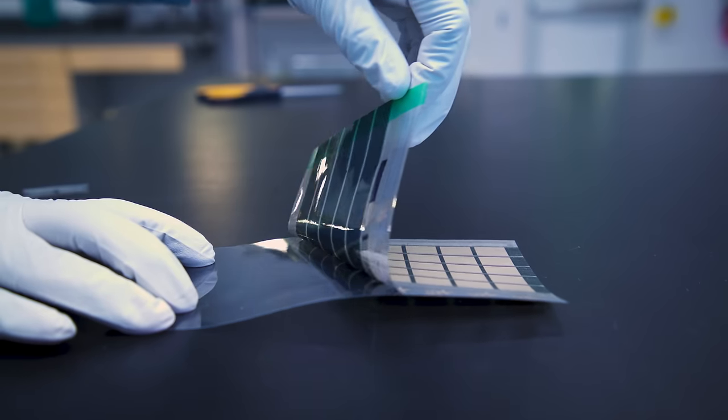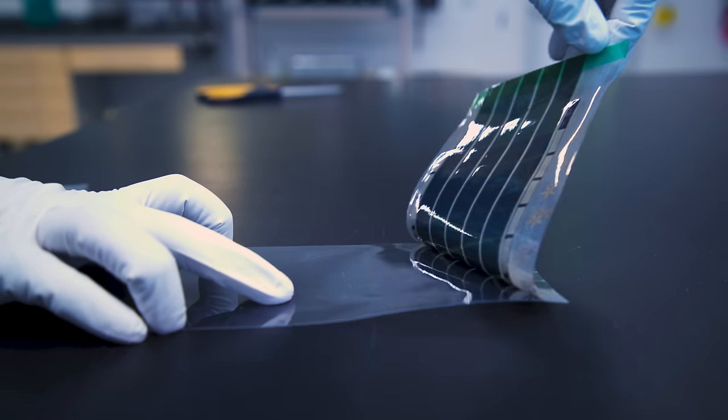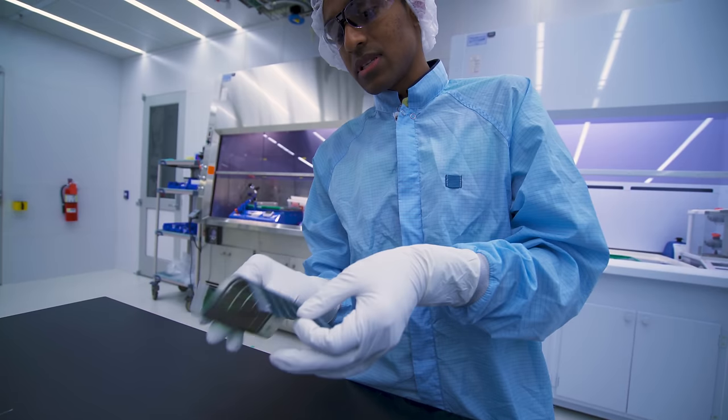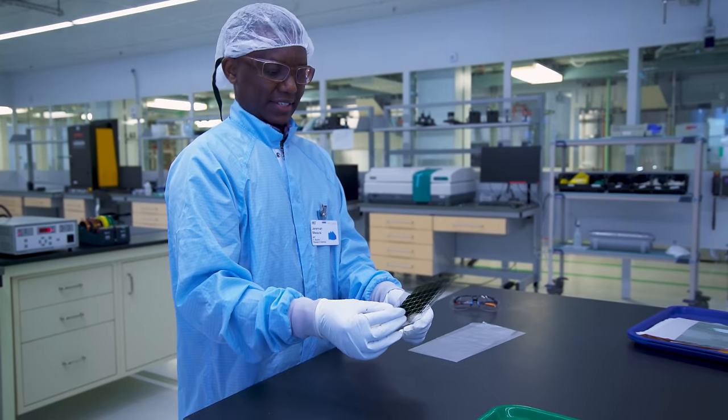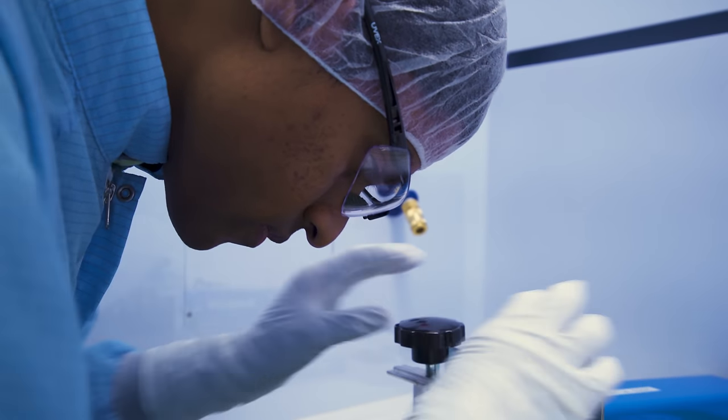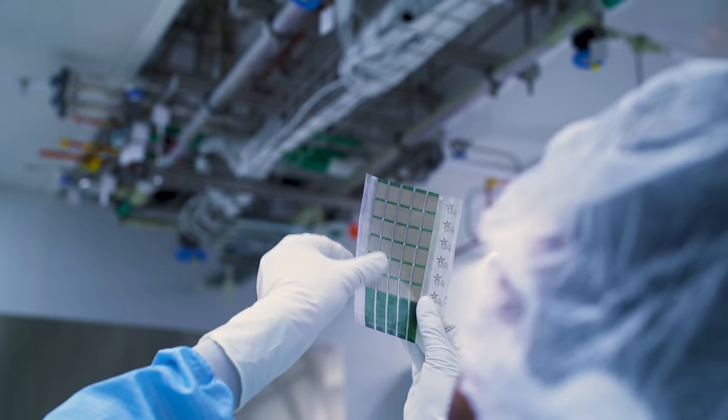Solar panels as thin as paper and as flexible as fabric that could be applied to many different surfaces and used in a wide variety of applications could be available soon thanks to a new approach to manufacturing solar cells being developed at MIT.